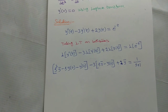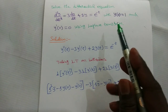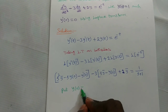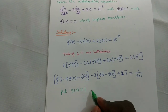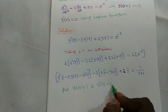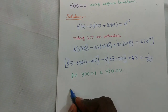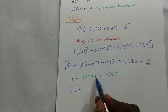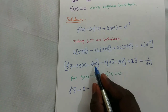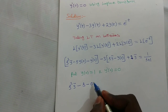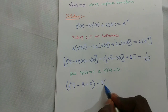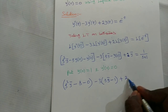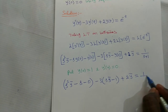Now substituting the initial conditions: y(0) equals 1 and y'(0) equals 0. So we get s² y-bar minus s·(1) minus 0, minus 3 into s·y-bar minus 1, plus 2·y-bar equals 1/(s+1).